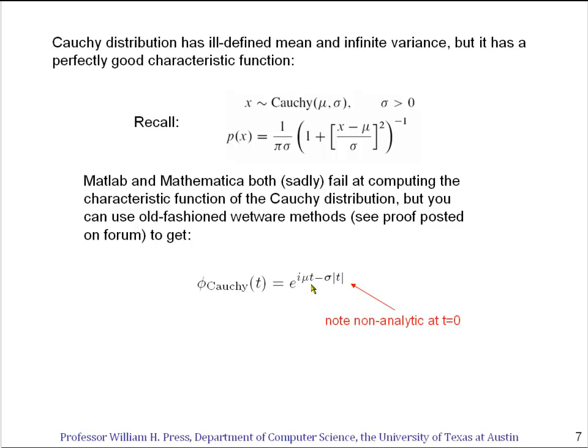Once again, we get an e to the i mu t. That's just a rotating term in the complex plane that indicates what the value of mu is. And now instead of a Gaussian here, instead of a normal here, we get e to the minus sigma times the absolute value of t.